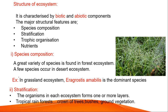Next, coming to stratification. In stratification, the organisms in each ecosystem form one or more layers. For example, in a tropical rainforest, we can see big trees, small bushes, small shrubs, and ground vegetation like grass. The crown — the top of the trees — forms one type of layer where we can see some birds. Bushes form another layer, and ground vegetation acts as yet another layer.